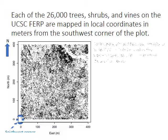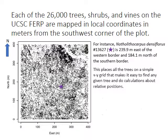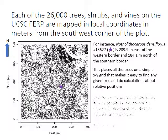For instance, a tan oak tree, Notholithocarpus densiflorus, with tag number 13627 is indicated by the purple star. Its coordinates are 239.9 meters east of the western border and 184.1 meters north of the southern border of the FERP. This system places all the trees in a simple x-y grid that makes it easy to find them in the forest and to do calculations about their relative positions and to study their spatial ecology.